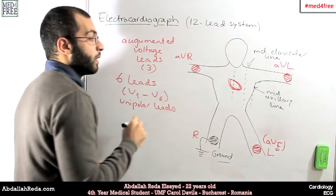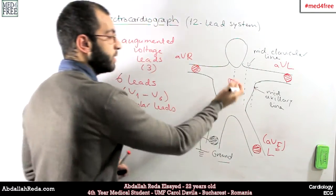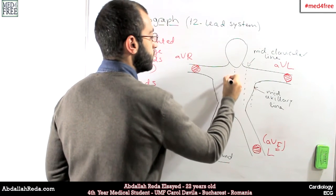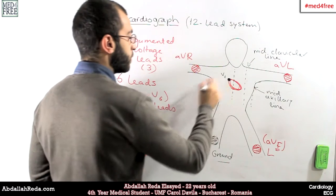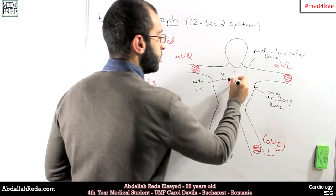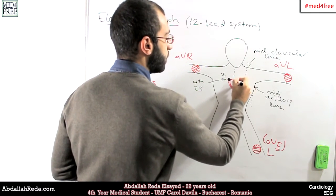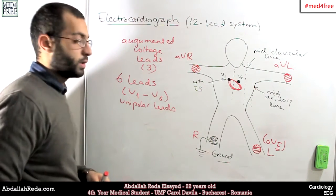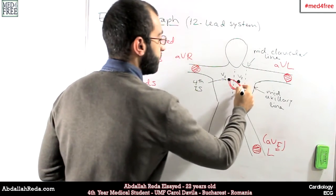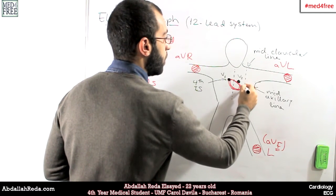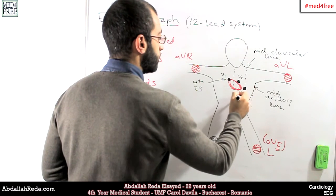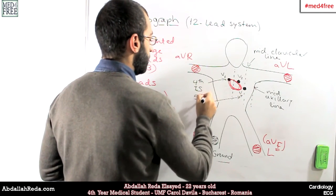So the first one, V1, is put to the right off the sternum at the fourth intercostal space. This is where V1 is put, fourth intercostal space. V2 is put exactly in the same area, but on the left side. And then we have V4. V4 is put in the fifth intercostal space on the mid-clavicular line.